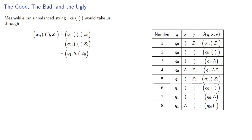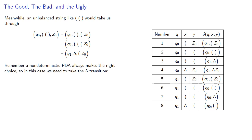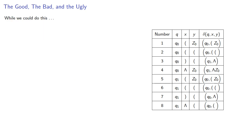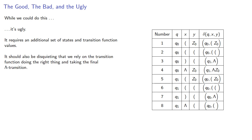We're now at the empty string. Now, remember, a non-deterministic pushdown automaton always makes the right decision, so in this case we need to make a lambda transition from state q1 to state q0, which is not an accepting state, but there's no more string to process — so at this point we crash. While we could do this, it's kind of ugly. It requires an additional set of states and transition function values, and it should also be disquieting that we rely on the transition function doing the right thing and taking the final lambda transition.